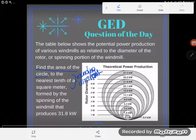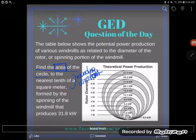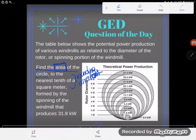Formed by the spinning of the windmill that produces 31.8 kilowatts. Okay, so I've been asked to find the area of the circle - of which circle? The circle that's made by this windmill that produces 31.8 kilowatts. So once again, anytime I'm asked to find area, I can feel free to consult my formula sheet.